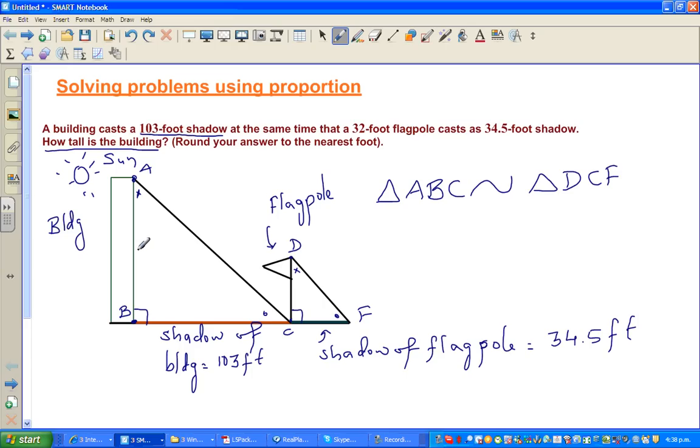If the angles are congruent, the sides are proportional. We want to find the height of the building, so let's say that is x. The height of the pole is 32 feet, this is 103 feet, and this is 34.5 feet.